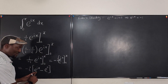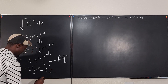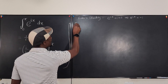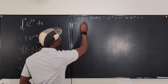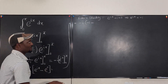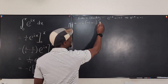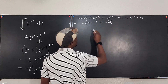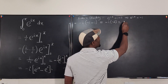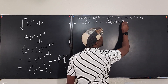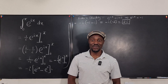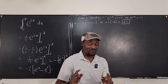Substituting, the expression becomes negative i times the quantity negative one minus one, which is negative i times negative two. Negative times negative gives positive, so the answer is 2i. That's the result from the direct integration method — but there's an easier alternative.